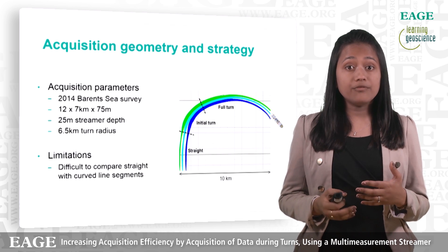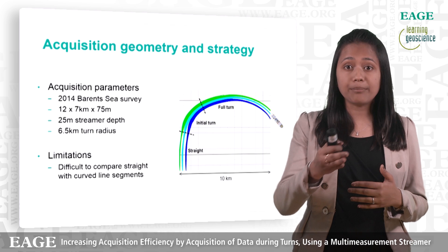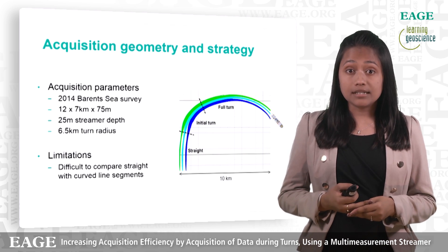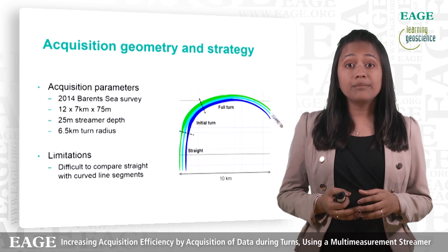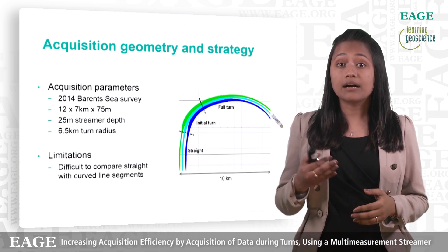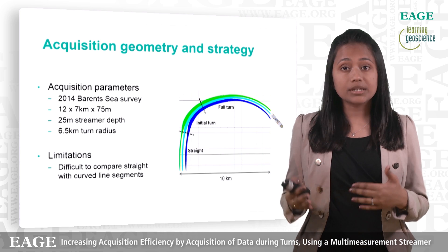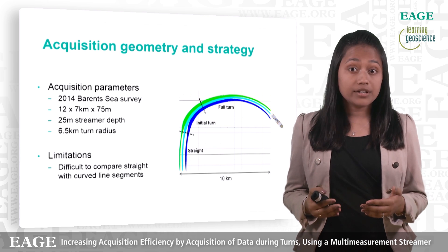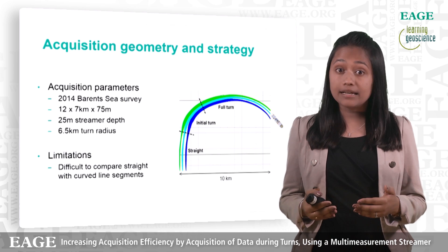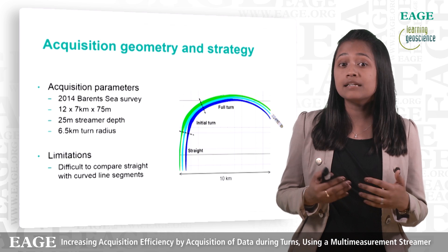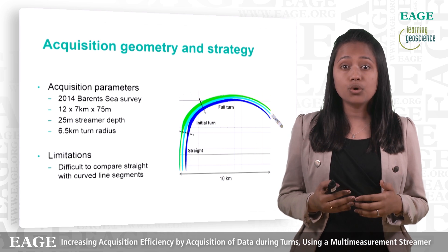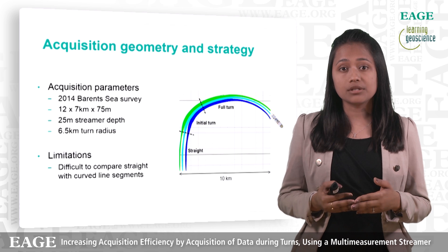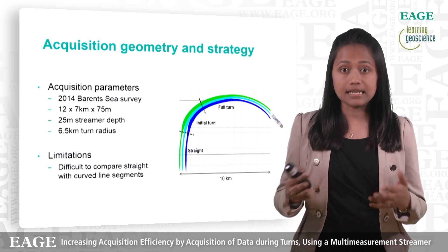These represent the streamer shape from the straight and parallel through to the full turn. One thing to be remembered here is that the main limitation of the study is that we are comparing straight with curved lines and they do not necessarily cover the same geology. However, in terms of comparing the overall data quality and signal-to-noise ratio, we are considering data acquired at the same time with the same acquisition equipment in the same area.